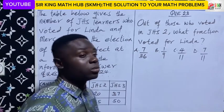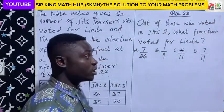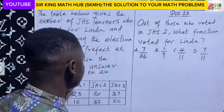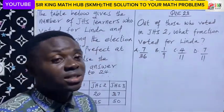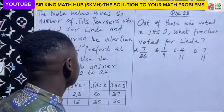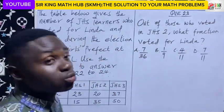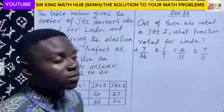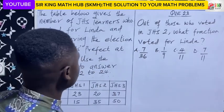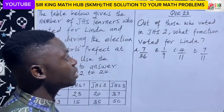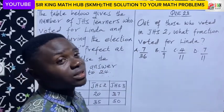Using the same preamble, we're told that we should use a preamble to answer questions 22 to 24. So for now, I want us to look at question 22.